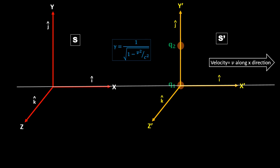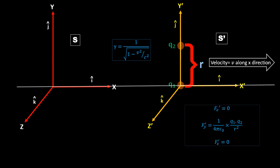We have two charges q1 and q2 in the S prime frame. Keep in mind: if you are in S prime, the charges are at rest with respect to you; but if you are in S, the charges are moving with respect to you. If the distance between q1 and q2 is r, then in S prime the forces are simple. Fx prime equals zero (no charge in x-direction), Fy prime equals the electrostatic force: (1/4πε₀)(q1·q2/r²), and Fz prime equals zero.